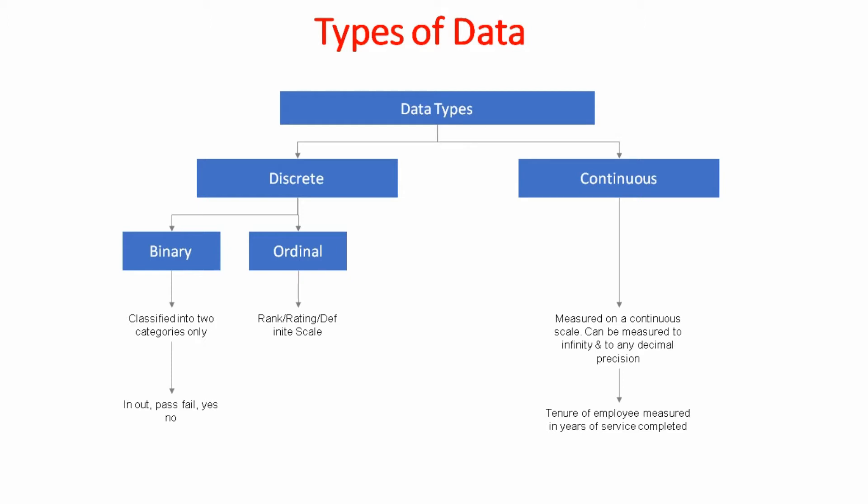Second discrete data type is ordinal. Ordinal data is of rank, rating or a definite scale. Employee satisfaction survey score on a scale of 1 to 5 is discrete type of ordinal data. Third discrete data type is count. Count is discrete count which is number of people in the room, number of computers, number of calls.